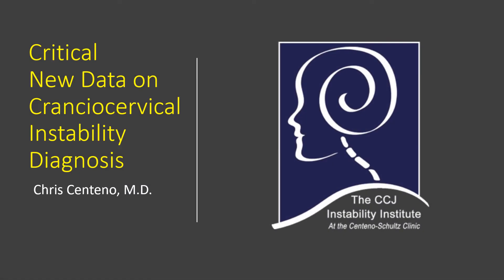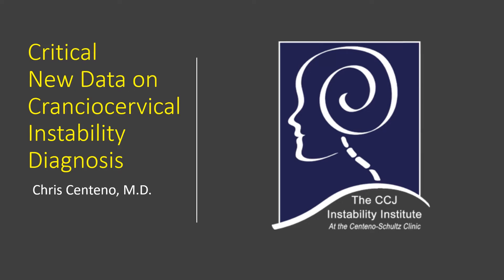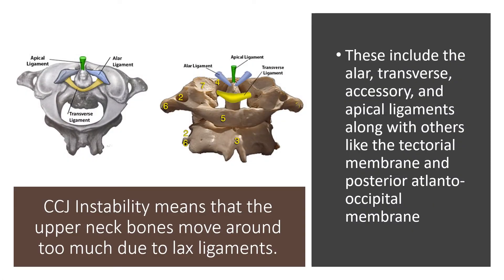Hi, it's Dr. Centeno and I'd like to introduce you to some interesting and really critical new data on cranial cervical instability diagnosis. Cranial cervical instability, or also called CCJ instability, means that the upper neck bones move around too much due to damaged or loose ligaments. There are lots of different ligaments up there, but we're going to focus today more on the alar ligaments.